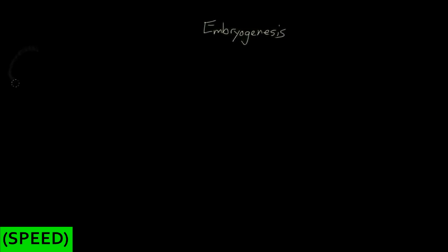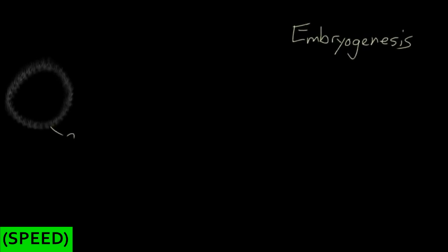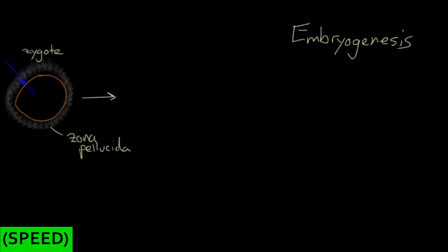We're going to talk about early embryogenesis. Say you're an egg cell, and you have this nice thick outer glycoprotein coat called the zona pellucida, and you've got your plasma membrane just inside of that, and a sperm has made its way through the zona pellucida and managed to get in through your plasma membrane and merged its genetic material with yours. You're now called a zygote, and you'd like to go on to form an embryo, but not much is going to happen when you're stuck as a single cell.